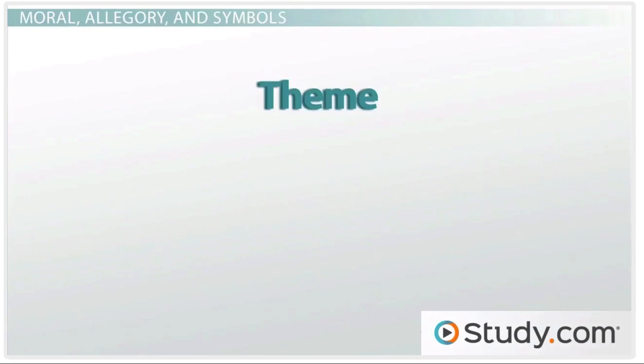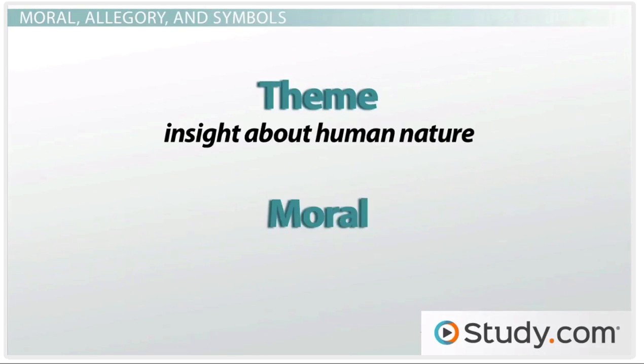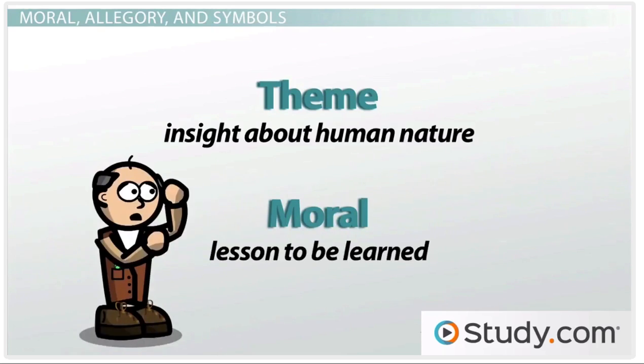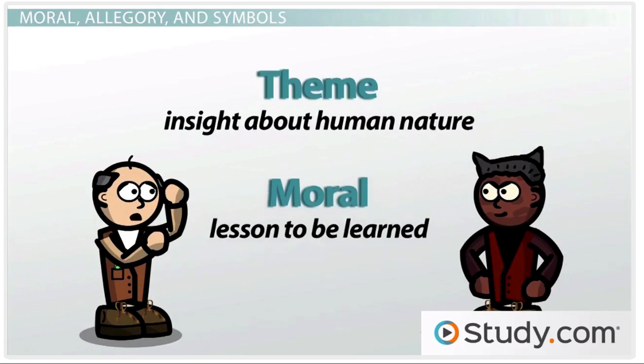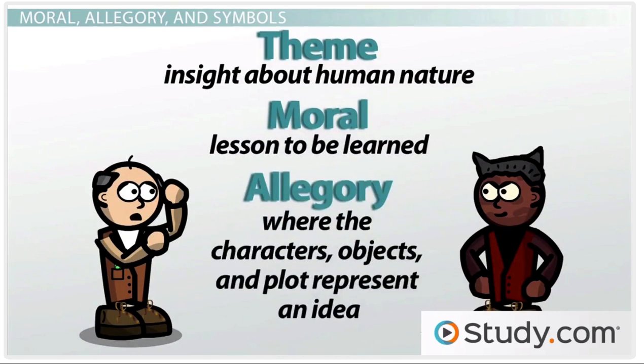Most short stories have a theme, which is insight about human nature. In this case though, The Devil and Tom Walker has a moral, or lesson to be learned. Clearly Irving is wanting us to see that greed and moral corruption leads us down the wrong path. He illustrates this moral through the use of a literary device called an allegory, where the characters, objects, and plot represent an idea.